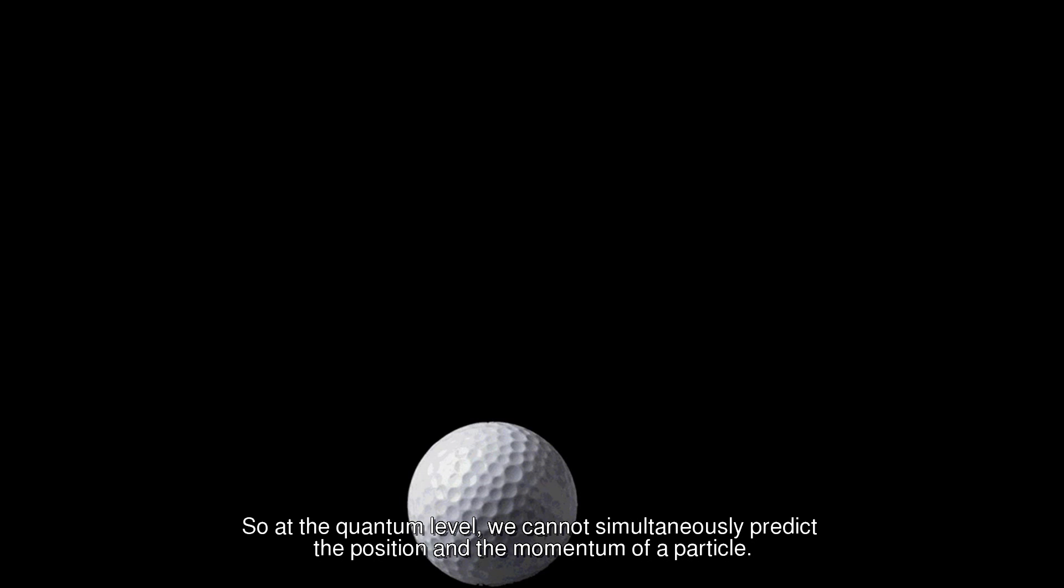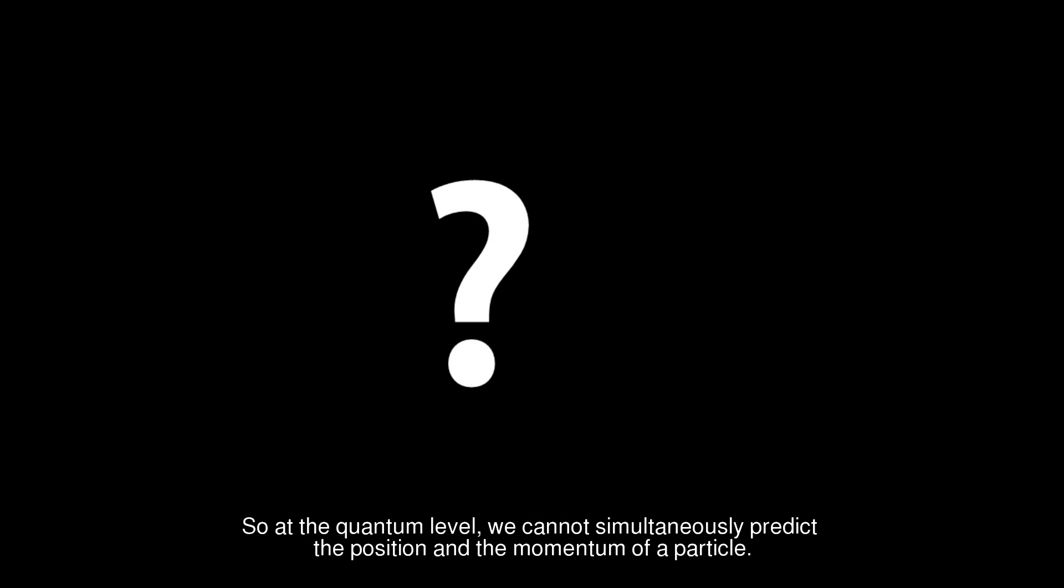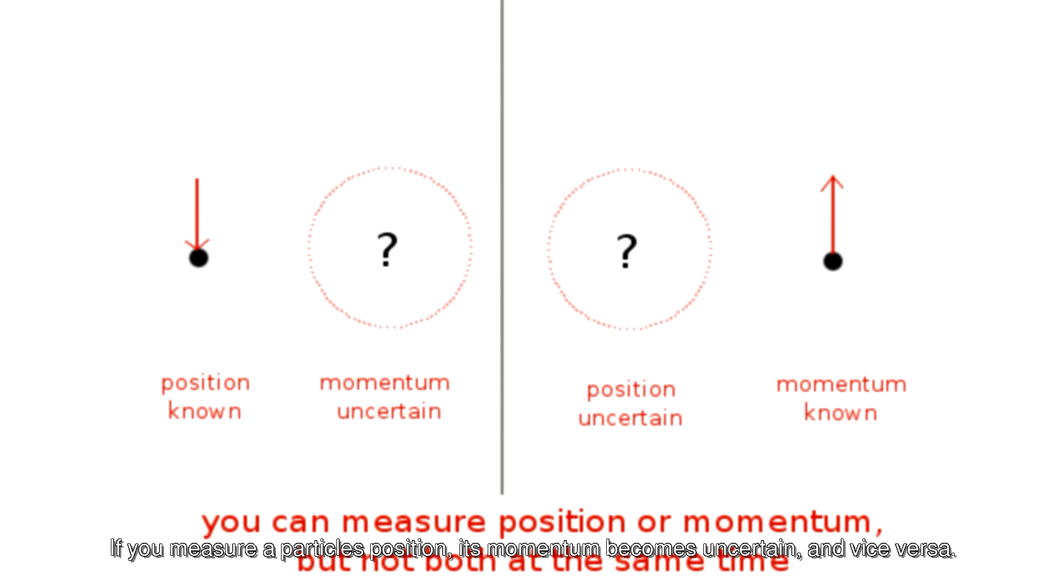So at the quantum level, we cannot simultaneously predict the position and the momentum of a particle, so it can only deal with probabilities. If you measure a particle's position, its momentum becomes uncertain, and vice versa. So you can only predict a probable position if you want to measure both.